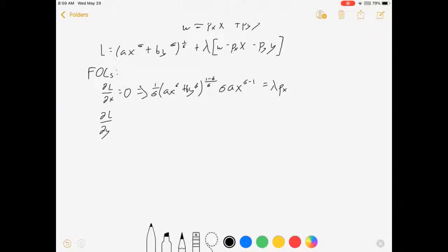dL/dy equals 0 implies the first part's all the same. All right, there we go. We've got our first order conditions.